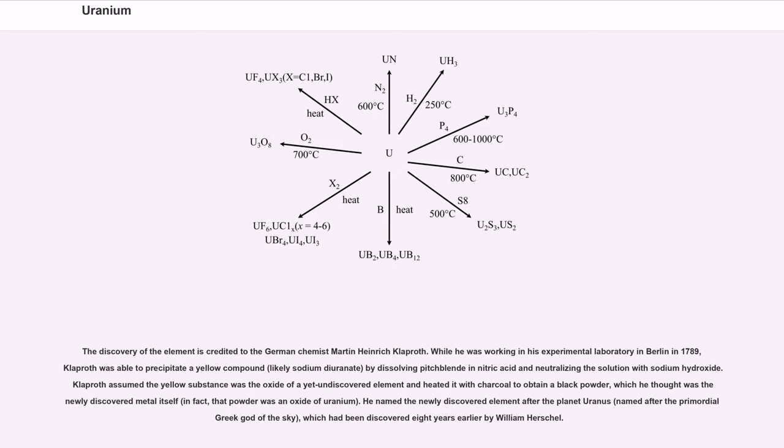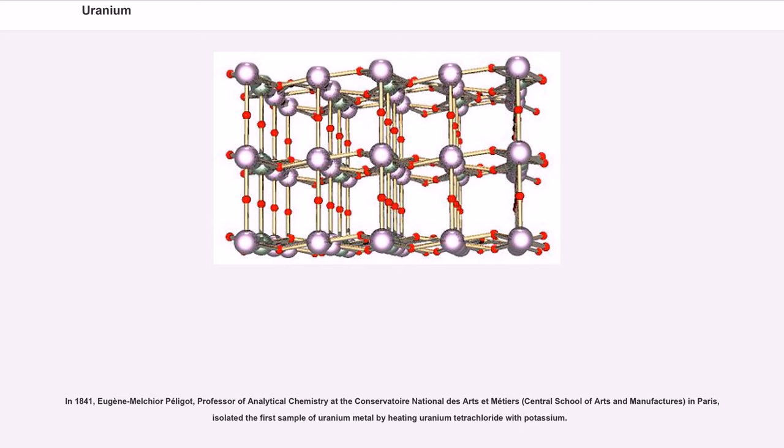The discovery of the element is credited to the German chemist Martin Heinrich Klaproth. While he was working in his experimental laboratory in Berlin in 1789, Klaproth was able to precipitate a yellow compound, likely sodium diuranate, by dissolving pitchblende in nitric acid and neutralizing the solution with sodium hydroxide. Klaproth assumed the yellow substance was the oxide of a yet undiscovered element and heated it with charcoal to obtain a black powder, which he thought was the newly discovered metal itself; in fact, that powder was an oxide of uranium. He named the newly discovered element after the planet Uranus, named after the primordial Greek god of the sky, which had been discovered eight years earlier by William Herschel. In 1841, Eugène-Melchior Péligot, professor of analytical chemistry at the Conservatoire National des Arts et Métiers in Paris, isolated the first sample of uranium metal by heating uranium tetrachloride with potassium.